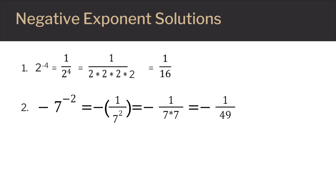Our second problem is negative seven to the negative two power. We need to use the order of operations here, which tells us to do the exponent before we deal with the negative sign out in front. So seven to the negative two power is one over seven squared, and we'll have that negative sign out in front. Seven squared is 49, so our final answer is negative one over 49.